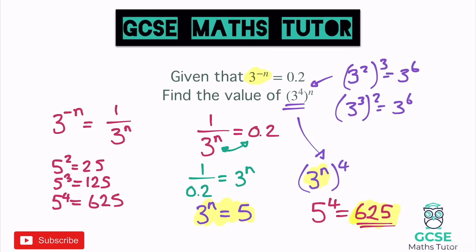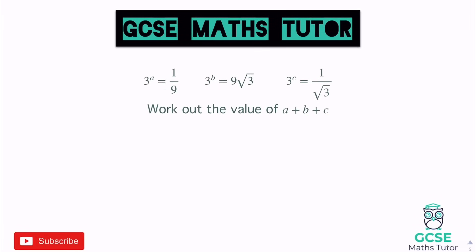On to the last question — and I definitely think this is the hardest one. Given that 3 to the power of a equals 1 over 9, 3 to the power of b equals 9 root 3, and 3 to the power of c equals 1 over root 3, work out the value of a plus b plus c. Some of these are okay and some are not very nice.